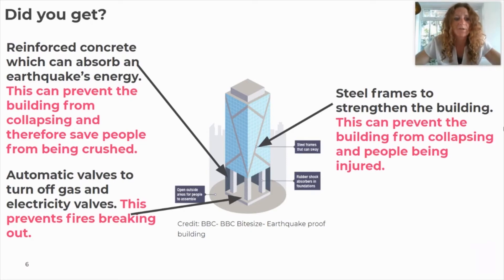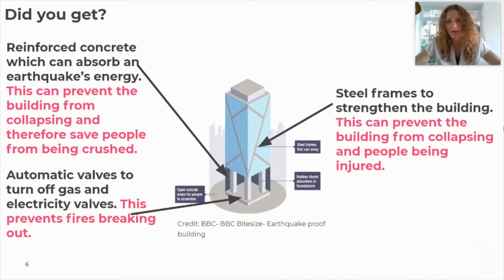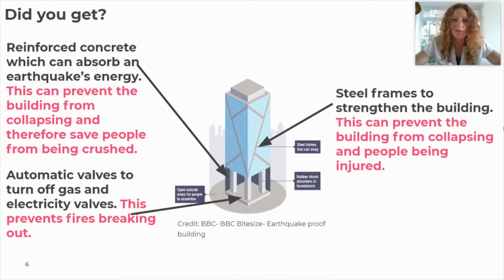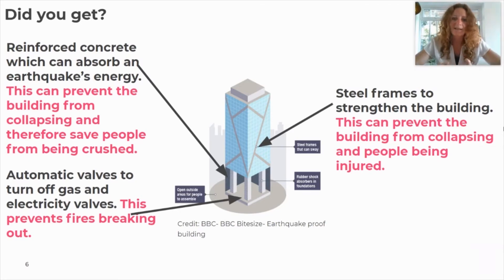For automatic valves: 'this prevents fires breaking out' — after the 1995 Japan earthquake that was a major problem, so they've taken action to stop fires following earthquakes. For steel frames: 'this can prevent the building from collapsing and people being injured.' I've given a different reason — injured rather than crushed — to show a distinct explanation. If you haven't got those explanations, pause the video now and add them in.